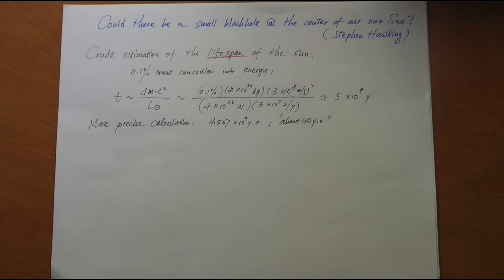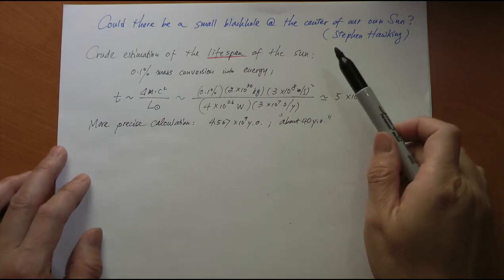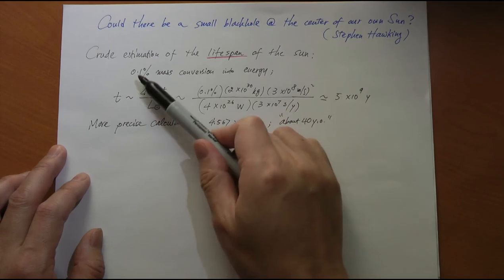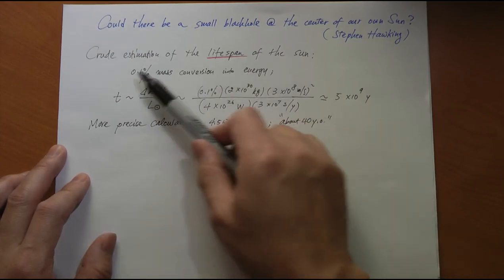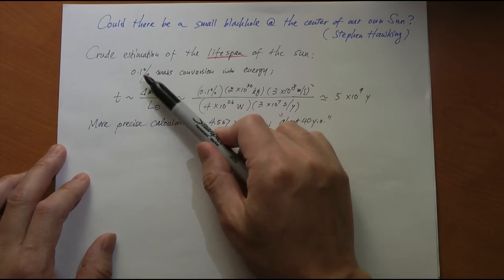This black hole sucks matter into it and basically accelerates particles into it. As these particles accelerate, they release energy through radiation, and that is a new source. It is not nuclear fusion, it's a new source which supplements the energy from nuclear fusion. That explains why the nuclear fusion can undergo at a lower rate and you still produce this much energy.